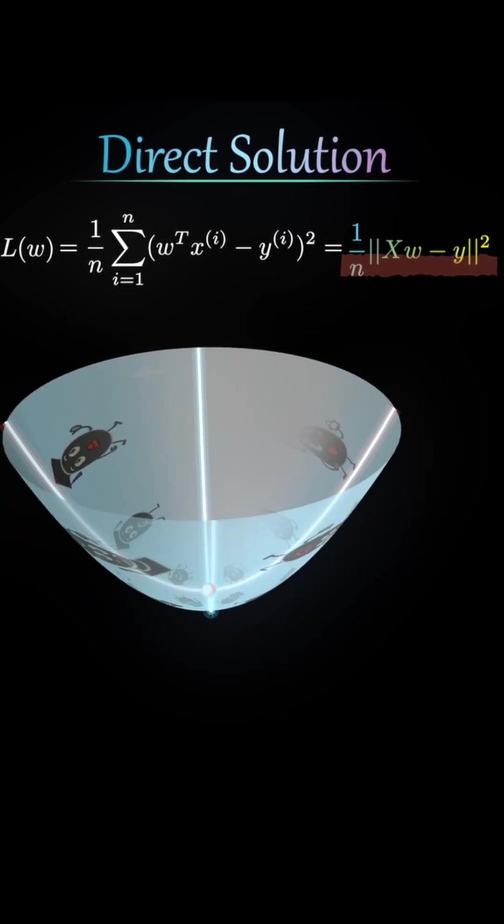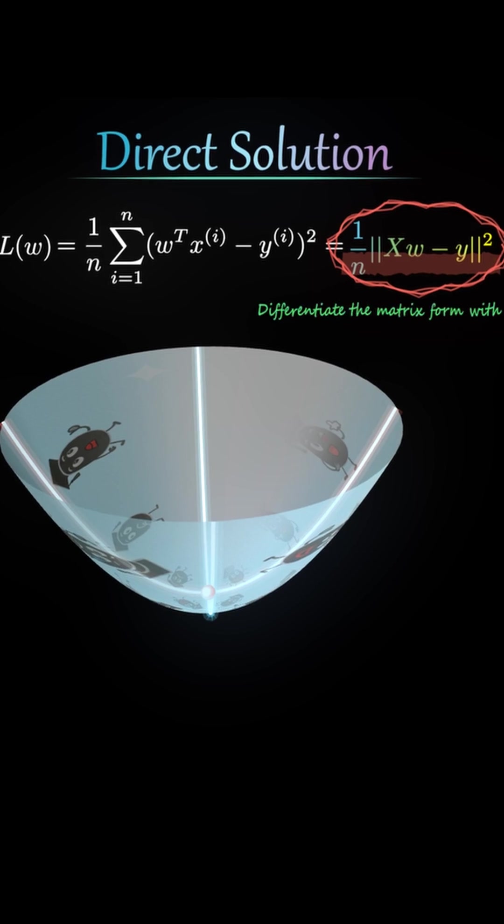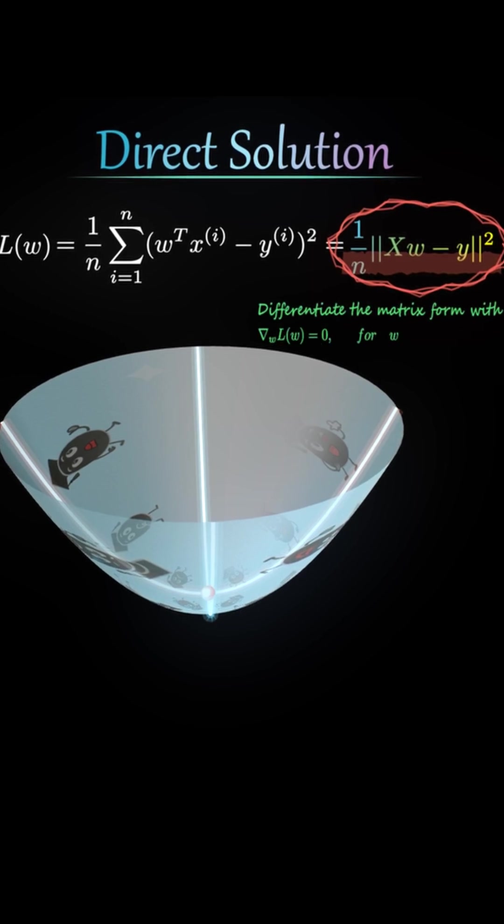Now, since L is convex in all components of w, we can find the optimal w by taking the derivative of this matrix expression and setting the gradient to zero.